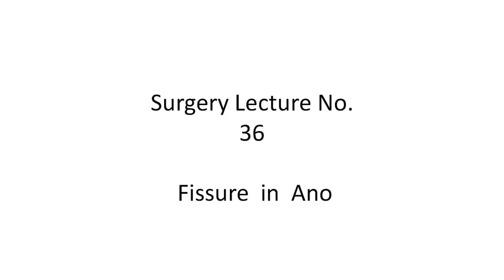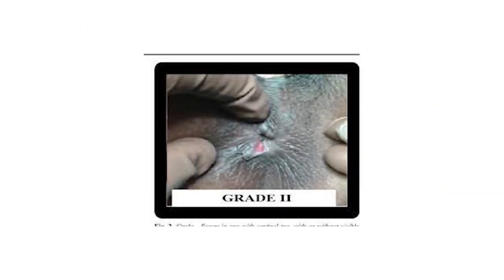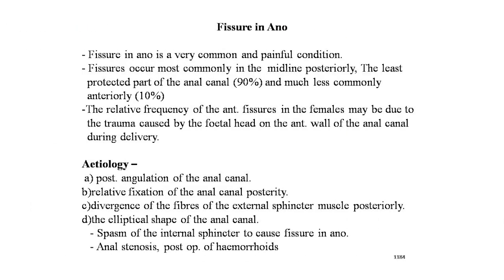Welcome, dear students, to surgery lecture number 36 — Fissure in Ano. In this lecture, we will learn about acute fissure in ano, chronic fissure in ano, and its treatment including surgical treatment. Fissure in Ano is a very common and painful condition. It occurs most commonly in the midline posteriorly, which is the least protected part of the anal canal.